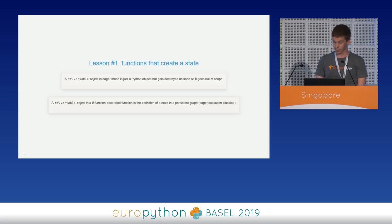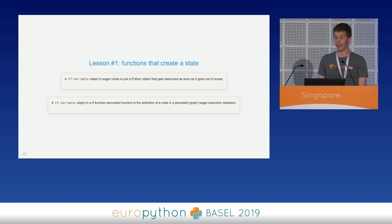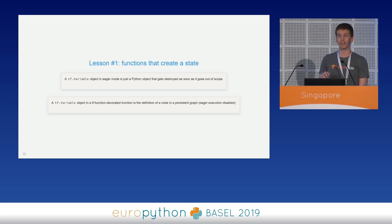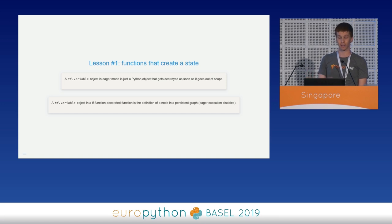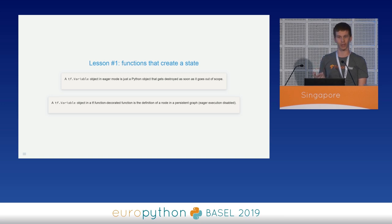The lesson is this: a tf.Variable object in eager mode is just a Python object that gets destroyed as soon as it goes out of scope — that's why the function works correctly in eager mode. But a tf.Variable in a TF function-decorated function is the definition of a node in a persistent graph, since eager execution is disabled in that context. Since the graph is persisted, we cannot define a new variable every time we call the function.